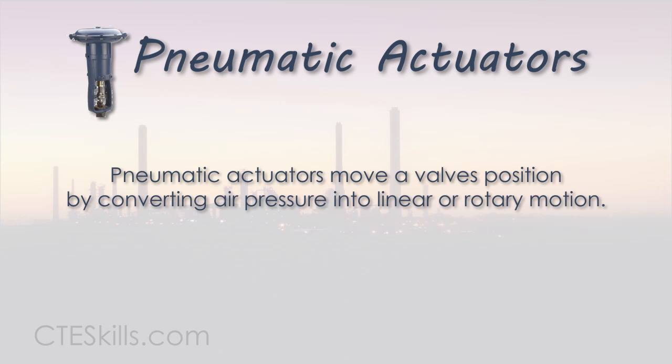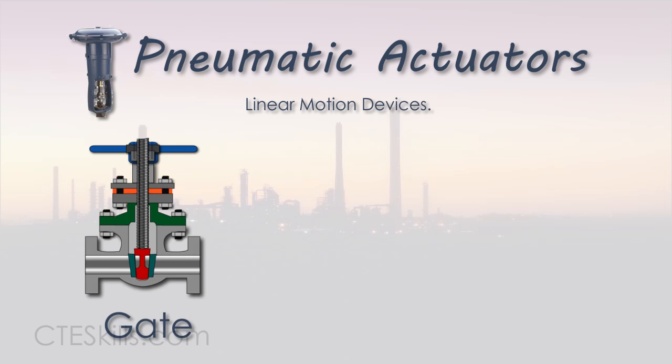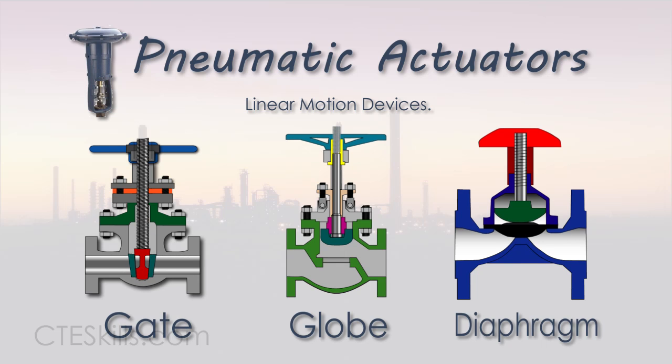Pneumatic actuators move a valve's position by converting air pressure into linear or rotary motion. Linear motion devices open and close valves such as gate, globe, diaphragm, and others with a sliding stem to control the position of the flow control element.